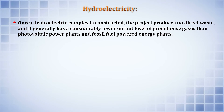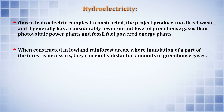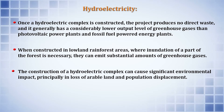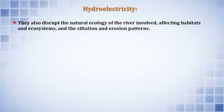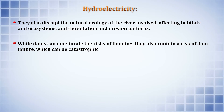When hydroelectric complexes are constructed in lowland rainforest areas, inundation of part of the forest is necessary and can emit substantial amounts of greenhouse gases, contributing to climate change. The construction of hydroelectric complexes can cause significant environmental impacts, principally the loss of arable land and population displacement. They can disrupt the natural ecology of the river, affecting habitats, ecosystems, siltation, and erosion patterns. While dams can mitigate flood risk, they also carry a risk of dam failure that can sometimes prove catastrophic.